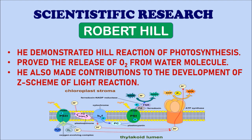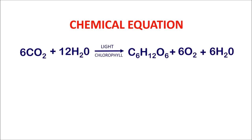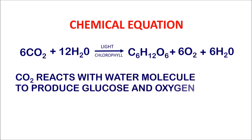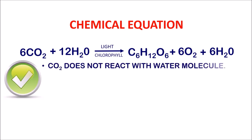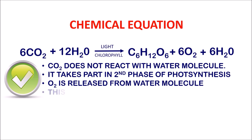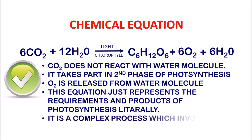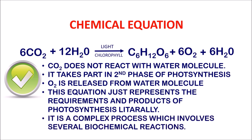Regarding the chemical equation 6CO2 + 12H2O gives rise to C6H12O6 + 6O2 + 6H2O — it might seem to say that carbon dioxide reacts with water to produce glucose and oxygen, but that is totally wrong. In reality, carbon dioxide does not react with the water molecule; it takes part in the second phase of photosynthesis, and oxygen is actually released from the water molecule. This equation simply represents the requirements and products of photosynthesis literally. It is a complex process involving several biochemical reactions, which will be discussed in further videos.